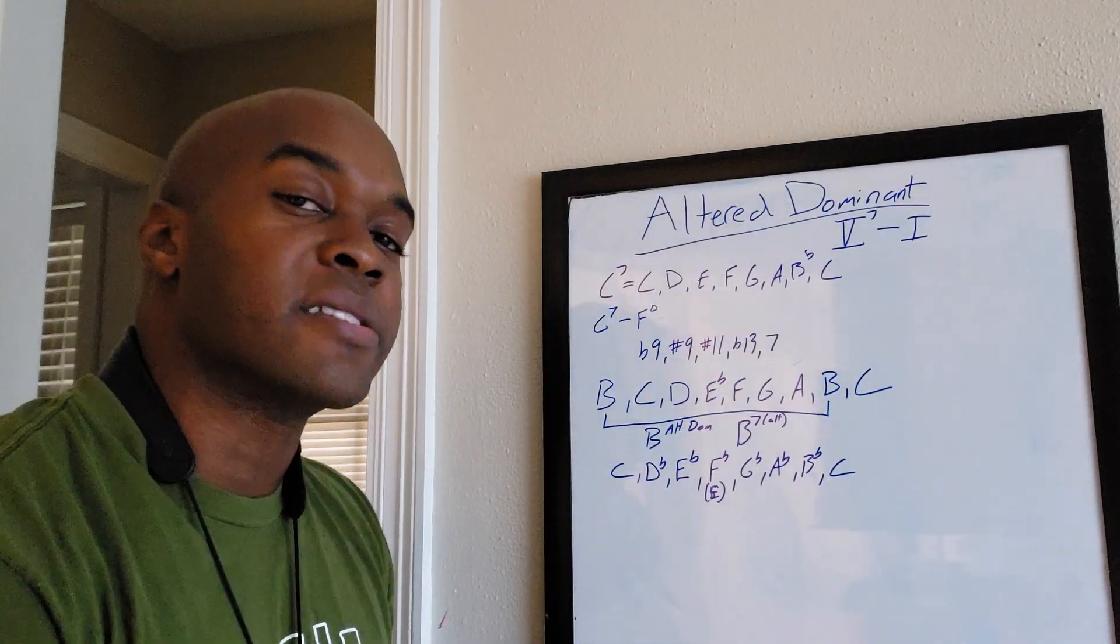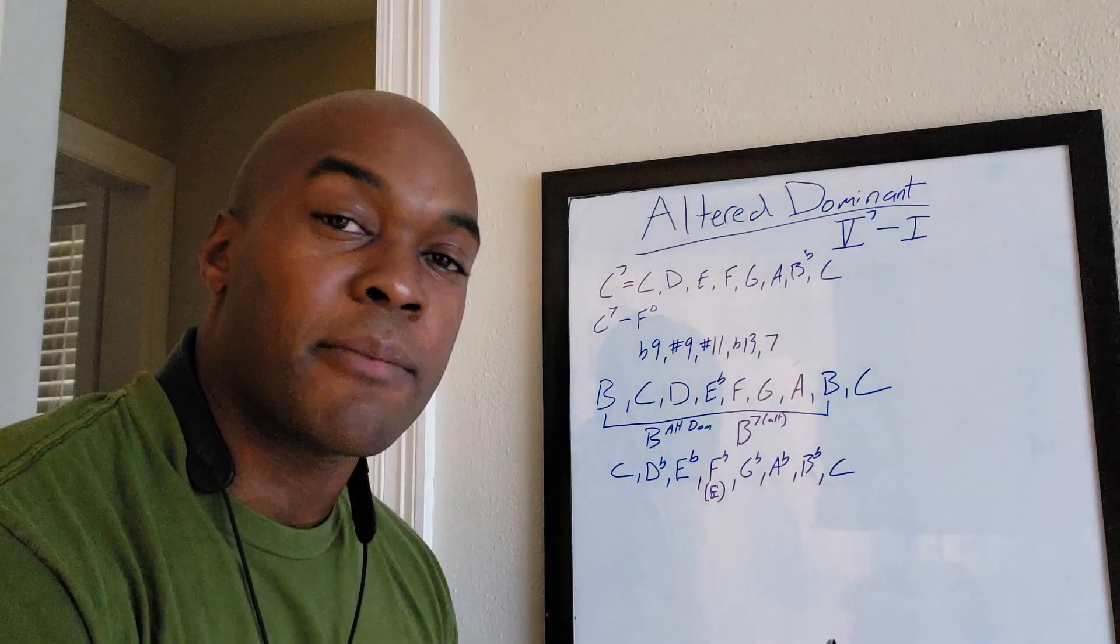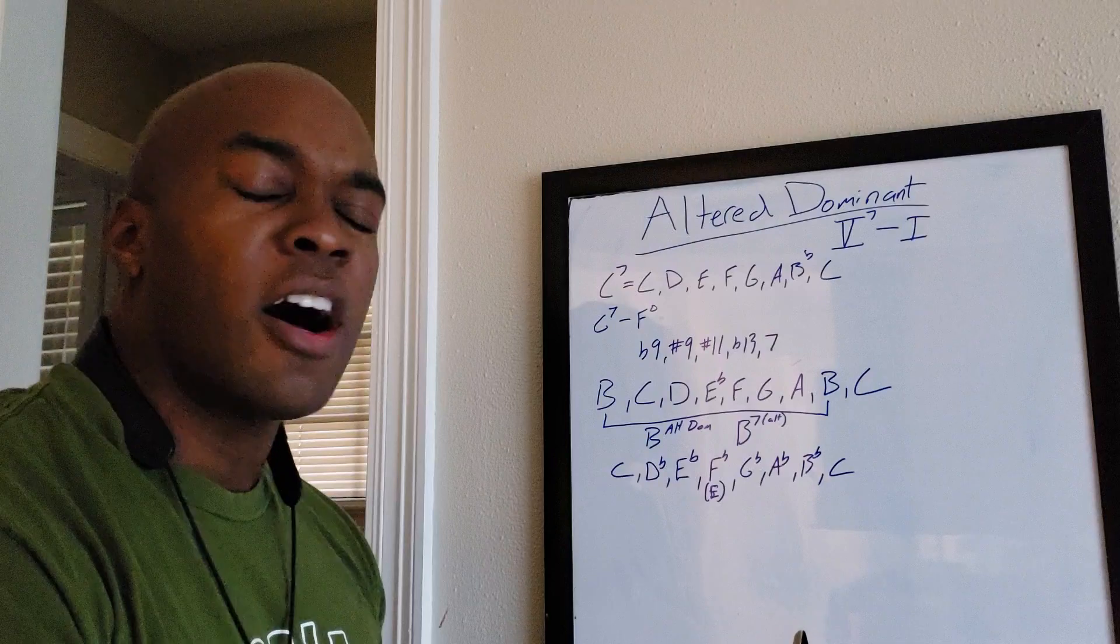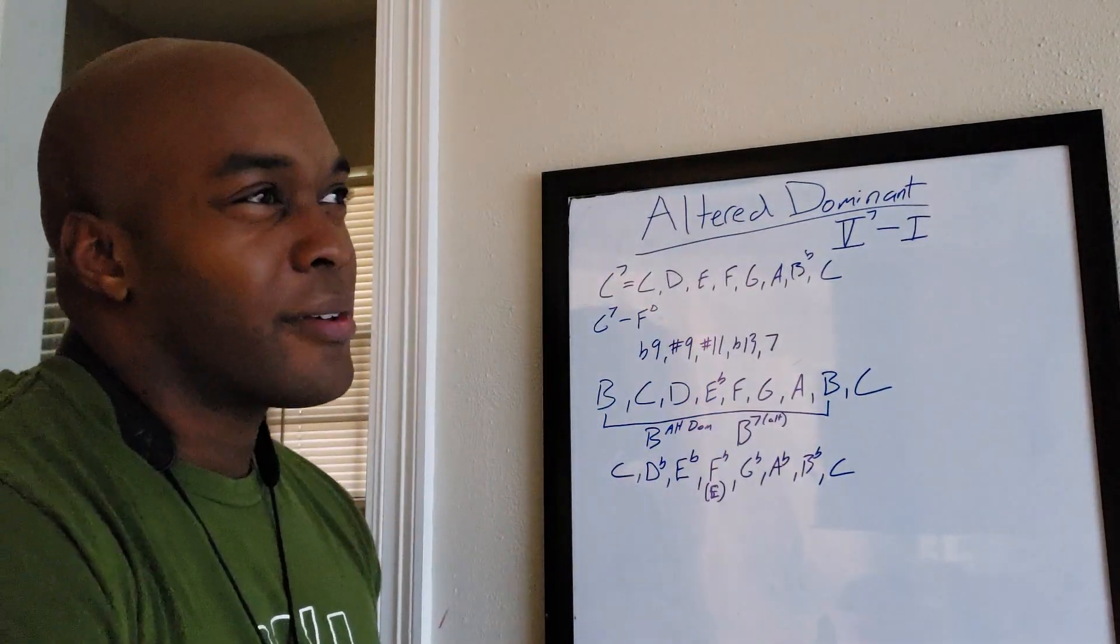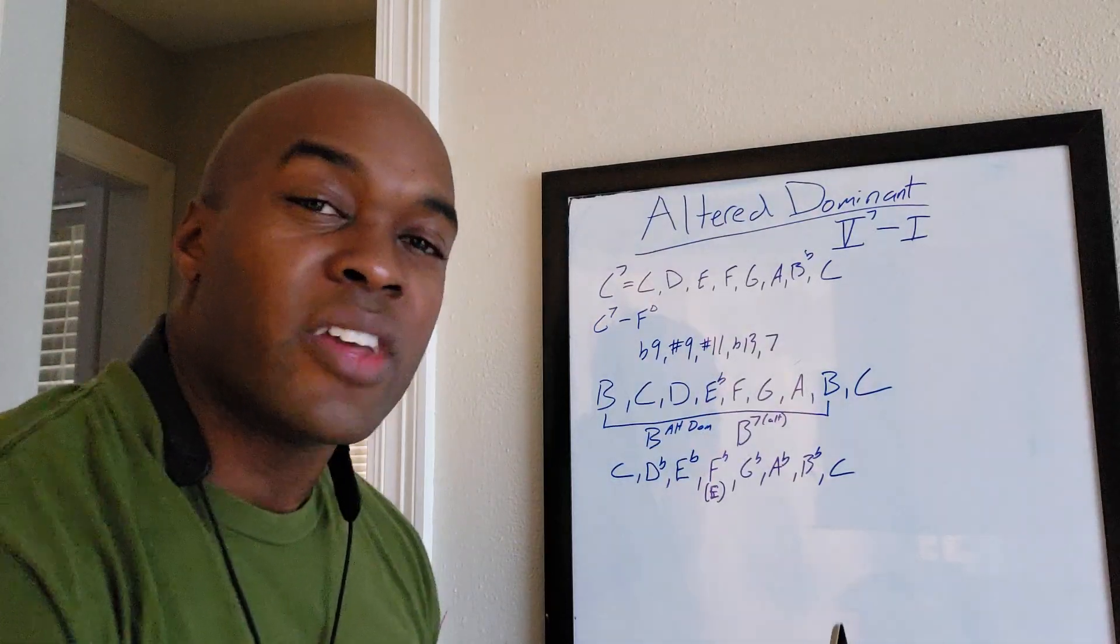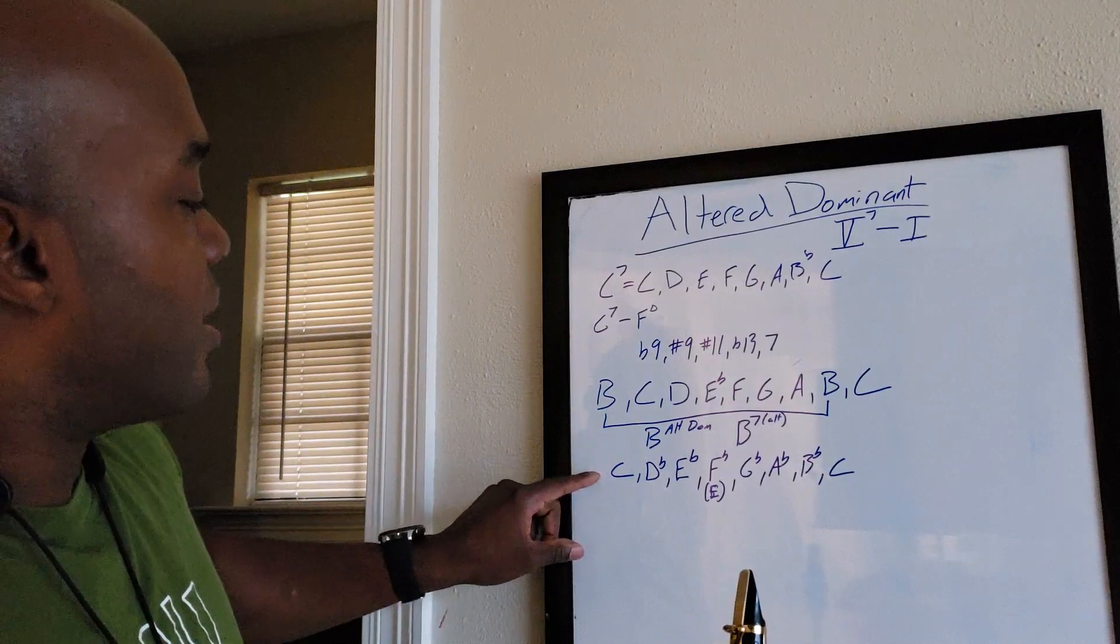So another name for the altered dominant scale, you might have heard it as the seventh mode of ascending melodic minor. Some people I believe call it super locrian. There's all kinds of names for it, but names aside, I like to think of the easiest ways to think of things.